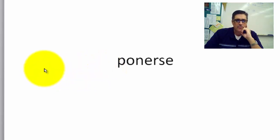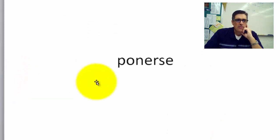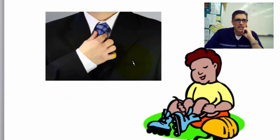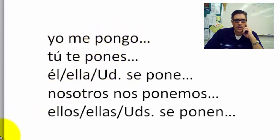Next: Ponerse. Él se pone corbata. Él se pone patines. Poner means to put, but ponerse means to put on oneself. Él se pone corbata y traje y camisa blanca. Remember, it's like tener — it's one of those 'go' verbs, so in the yo form: pongo. The rest are normal: tú te pones, ella se pone.